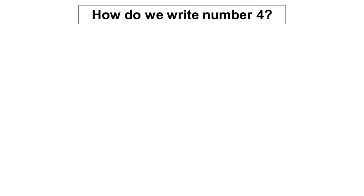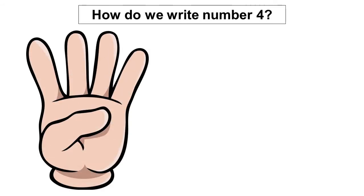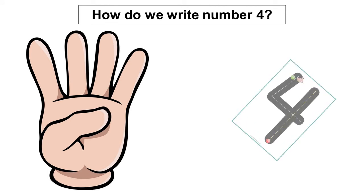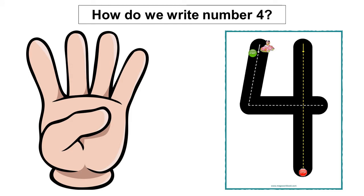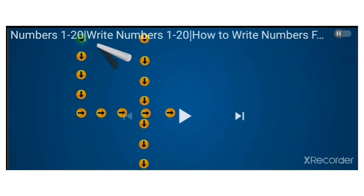Okay, KG1. How do we write number four? First, count on your fingers four. One, two, three, four. Our new number. Let's see how to write number four. From the big dot, we go down straight in the middle. Move to the right, stop. From the big dot, we go down straight in the middle.